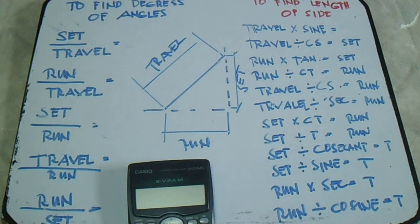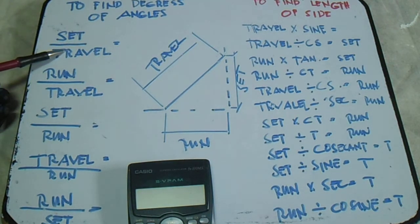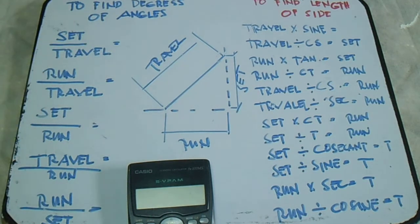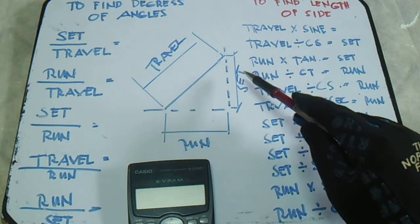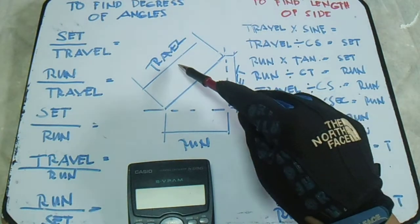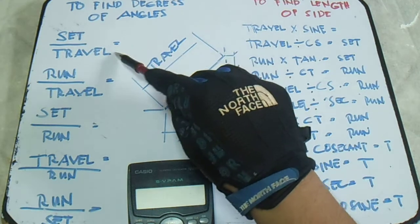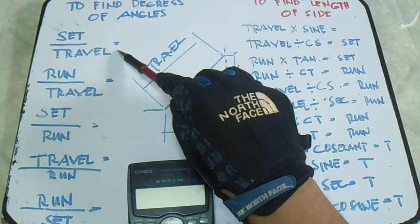Let's start with finding the degree of angles. Here we have set divided by travel, so this equals sine. This is our set divided by travel equals sine. So here is the formula.